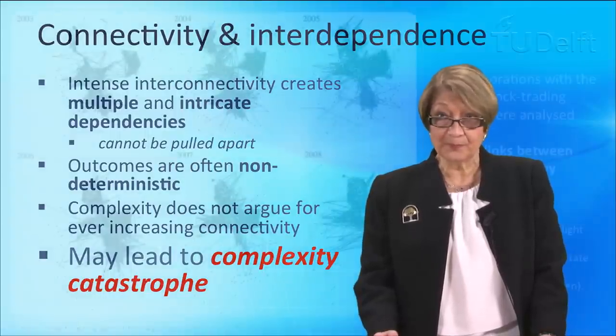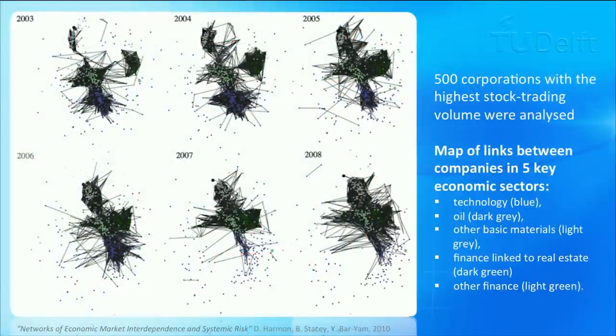Let me give you an example. An American group has done a study. The study was done in 2010. They took 500 corporations with the highest stock trading volume and analyzed them. What they did is they looked at five economic sectors: Technology, which you see in blue; Oil, dark grey; Other basic materials, light grey; Finance linked to real estate, dark green; Another finance, light green.